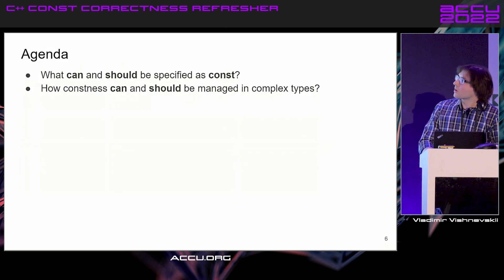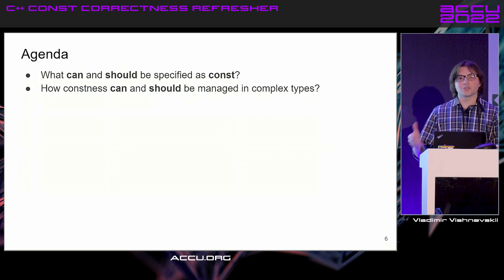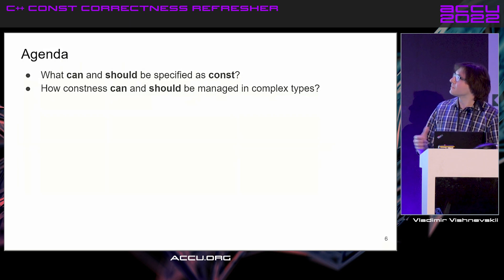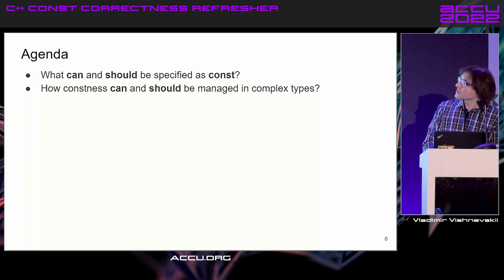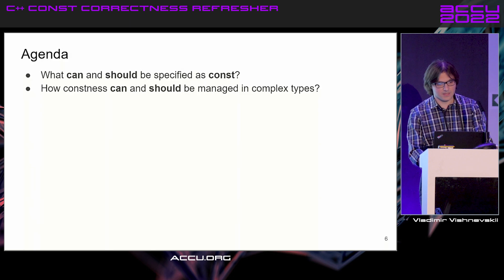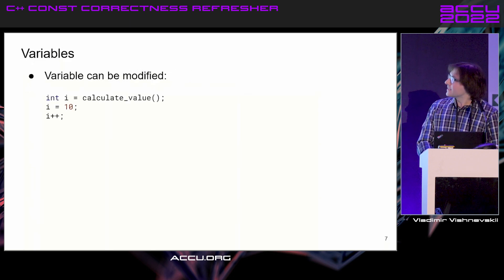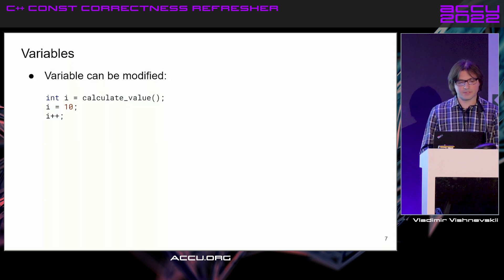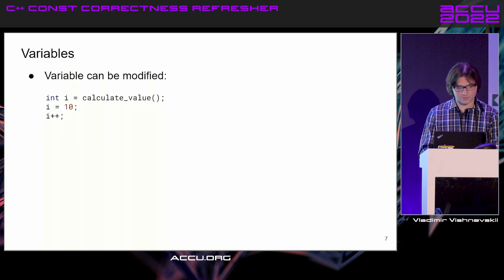What should and can be made immutable and marked const? And how should constness be managed in complex types? These are the two main questions to go through with examples, highlighting the places where problems with specifying objects as const are commonly seen.